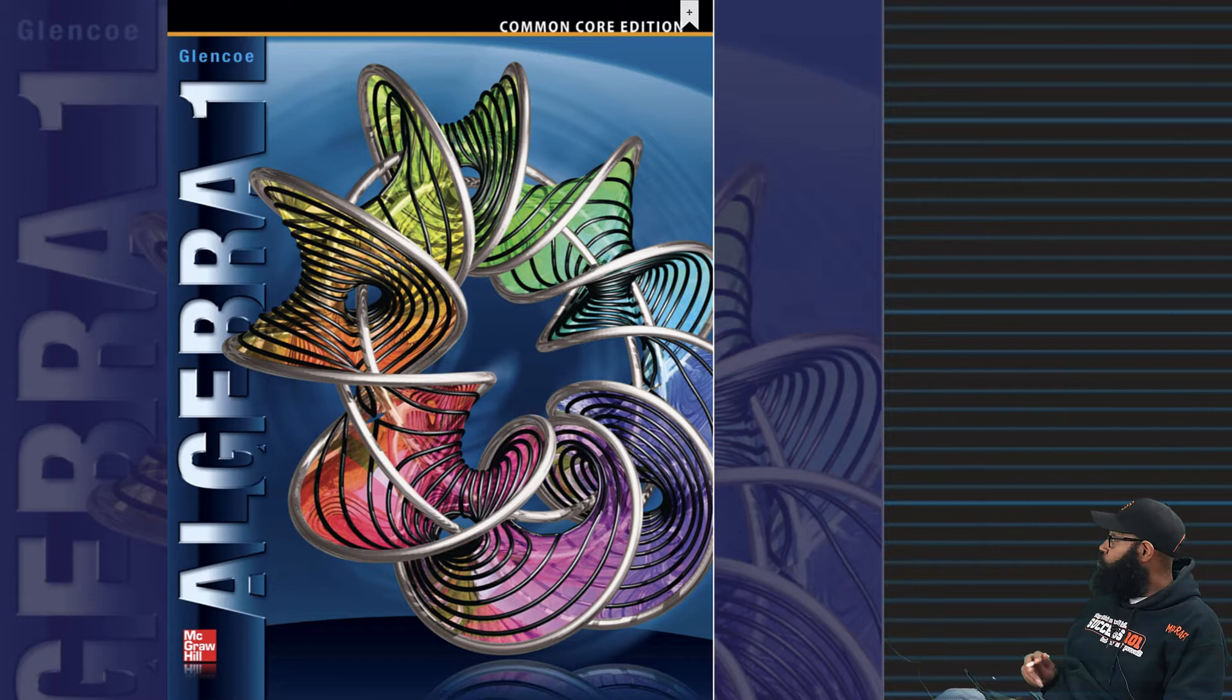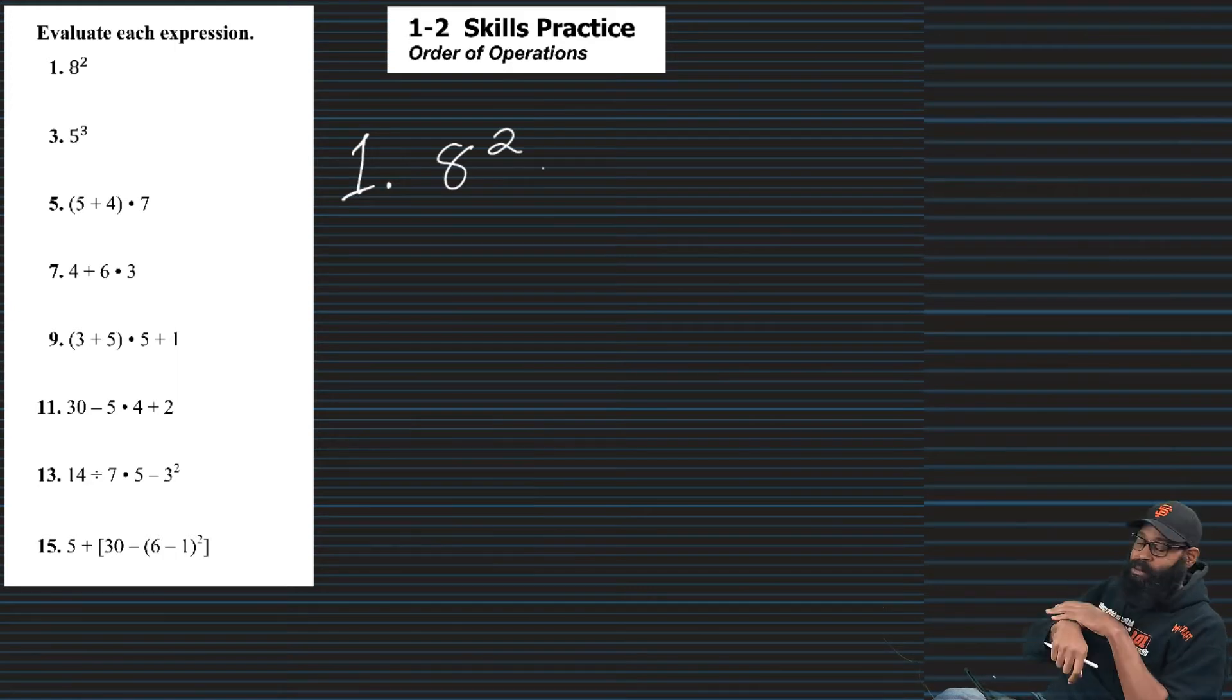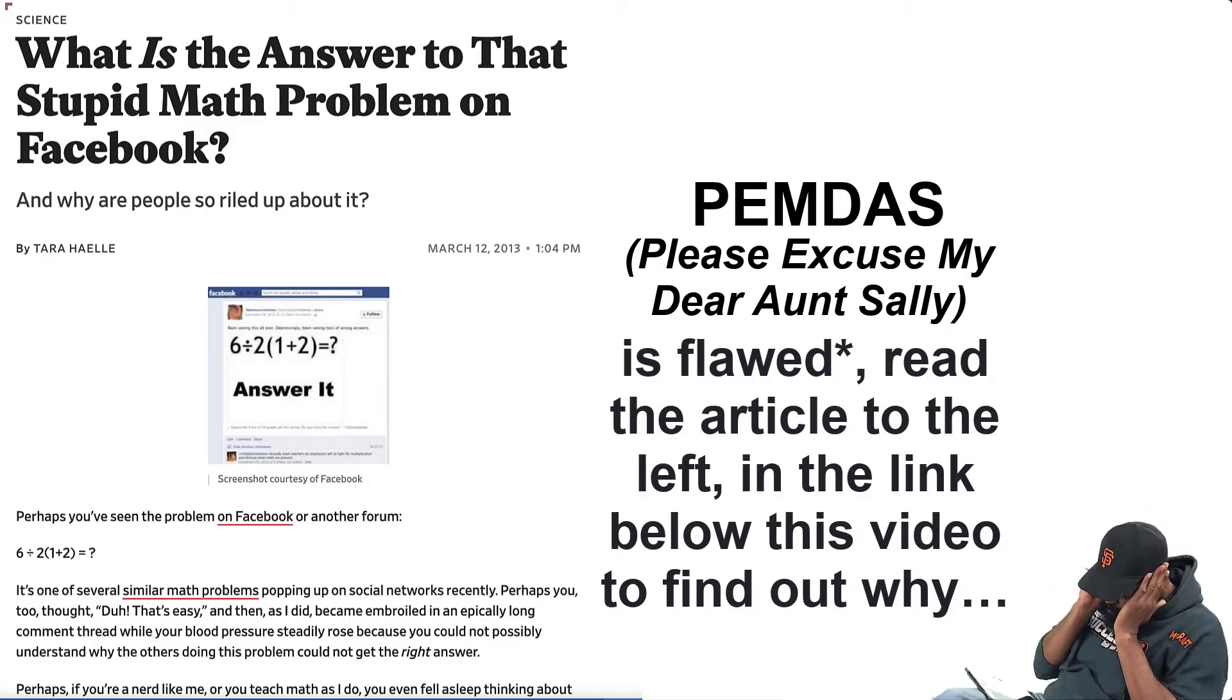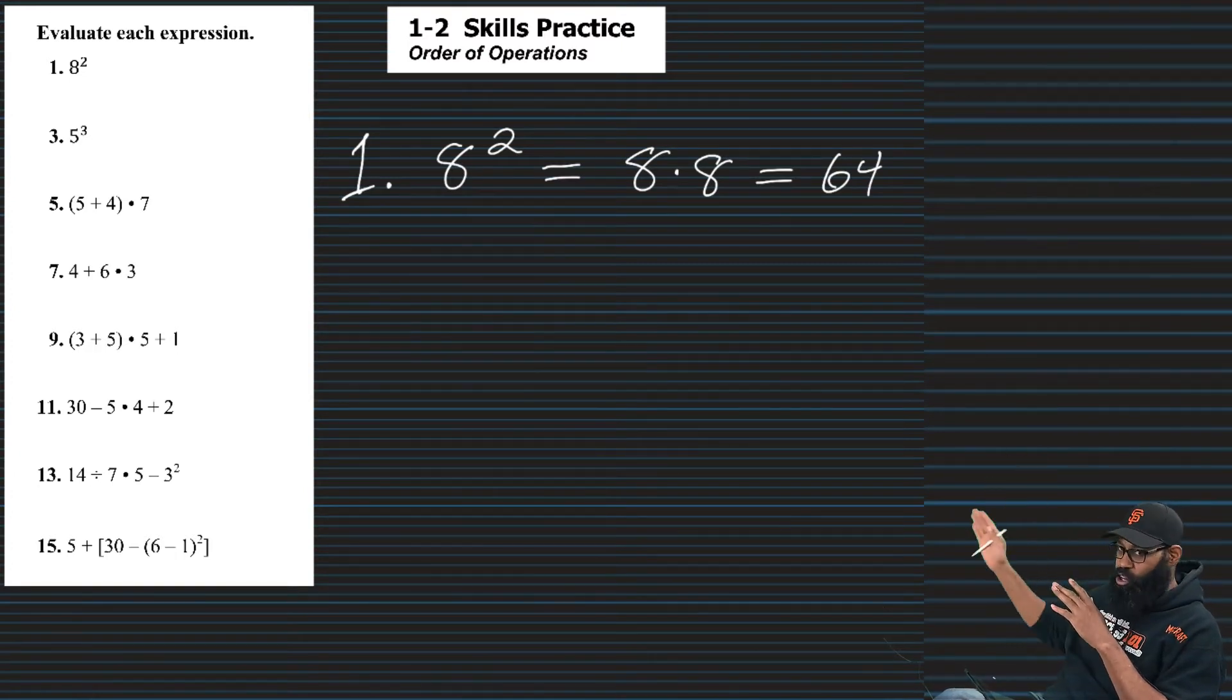This is nothing but that old school knockin' out math. Number one! Order of operations, guys. Do not say please excuse my dear Aunt Sally. I told you not to. I don't even know who your Aunt Sally is. We're going to see that later. But guys, easy as pie. Depending on what pie you eat. Eight square, eight times eight, 64. I'm not even boxing the answers.